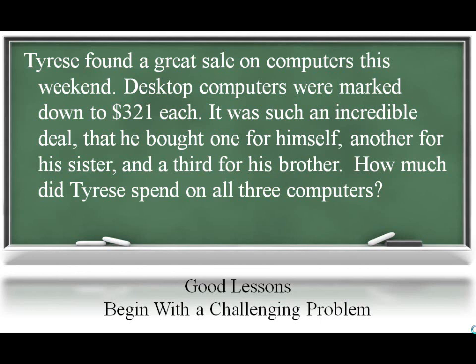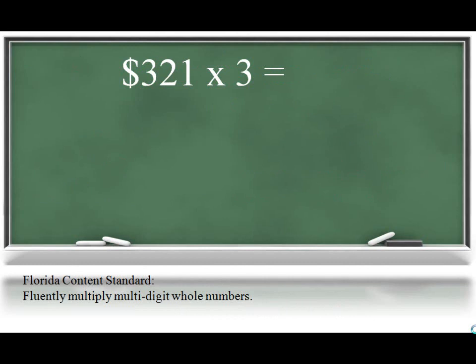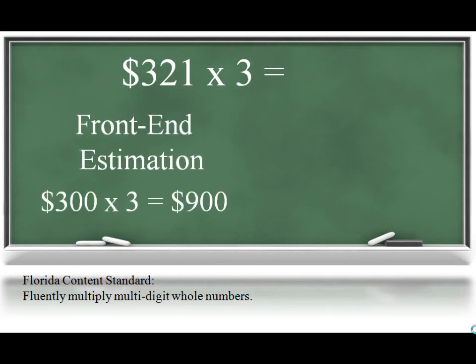Some students may ask why they need to estimate prior to solving the problem. The benefit to estimation before multiplying is that it quickly gives a student a benchmark that is reasonably close to the exact product. Using front-end estimation, such as 300 times 3 is 900, is quicker.